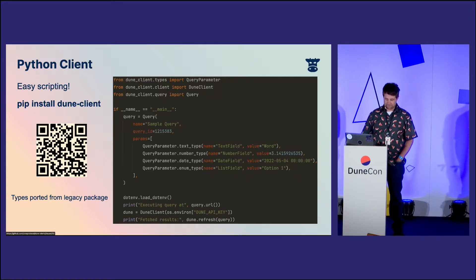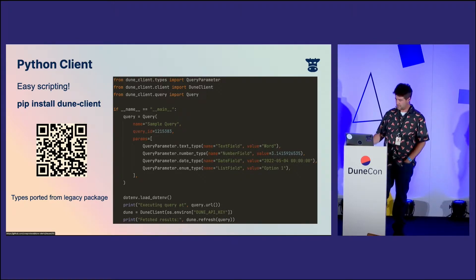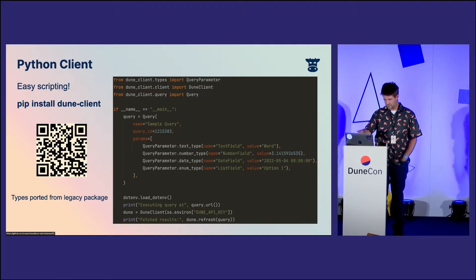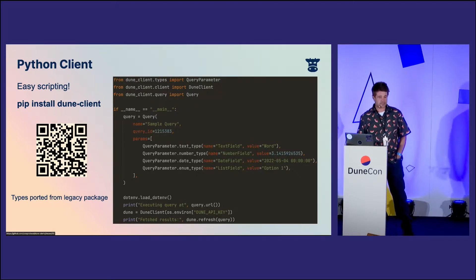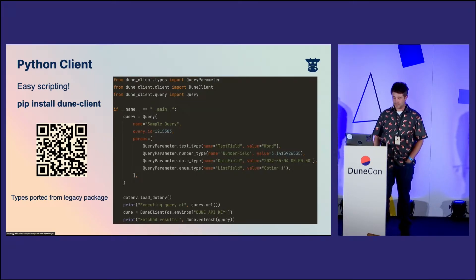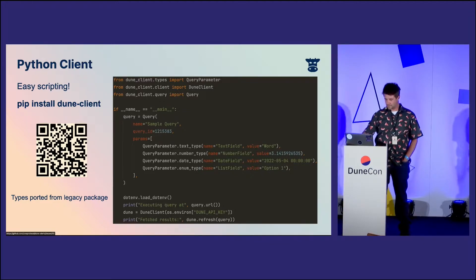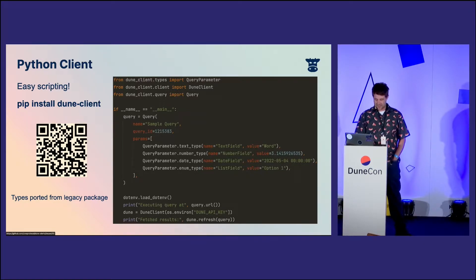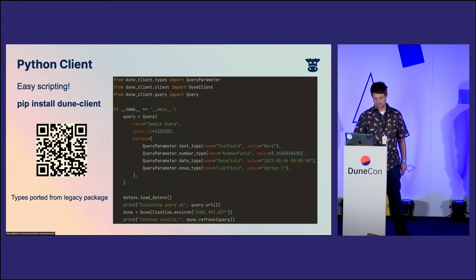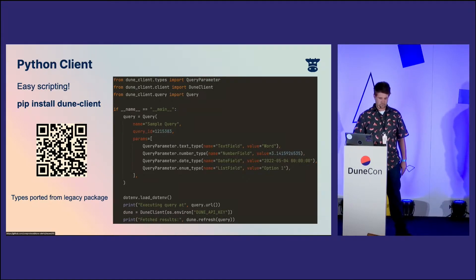You can call dune.refresh. The client itself really just takes the API key. Give it a query, refresh. This is pretty much how easy it is to use to start fetching data or pulling it directly from Dune via the API. There's a link here to the GitHub repo.